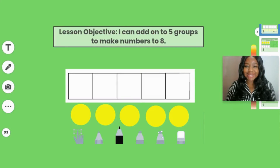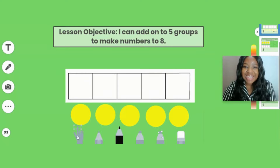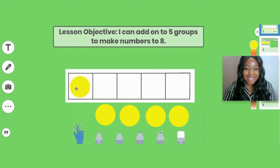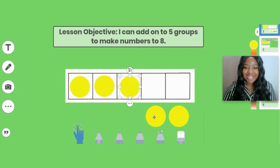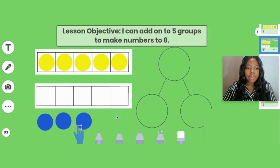First I'm going to explain to you how a five group looks. As you can see, it is organized — we always have to organize our five group. Organizing in math is very important. So what we're going to do now is fill in our five group. Can you count along with me? One, two, three, four, five. I'm going to write the number five so we know that we have five in our five group.